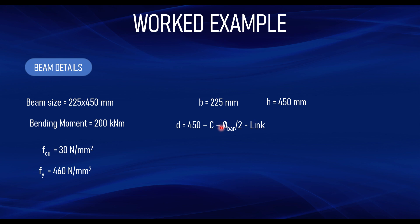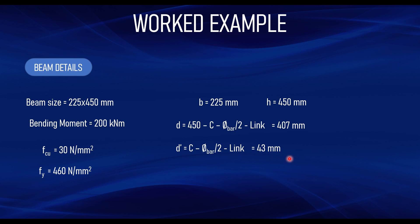Assuming a cover of 25 mm, a bar size of 16 mm, and shear links of 10 mm, you end up with d = 407 mm. The next thing to determine is d', the effective depth of the compression reinforcement, which equals cover plus half diameter of bar plus links, giving 43 mm using the same values. Therefore d' over d equals 43 divided by 407, which gives approximately 0.1 — this is dimensionless.